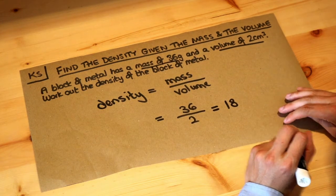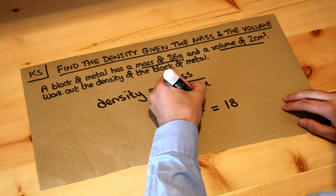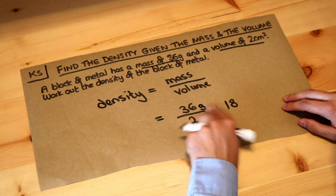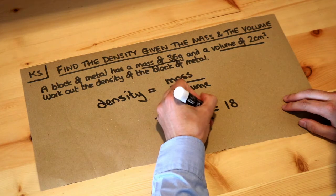Now what is the unit? Well the unit of the mass is grams so it's 36 grams and the unit of the volume was 2 centimeters cubed.